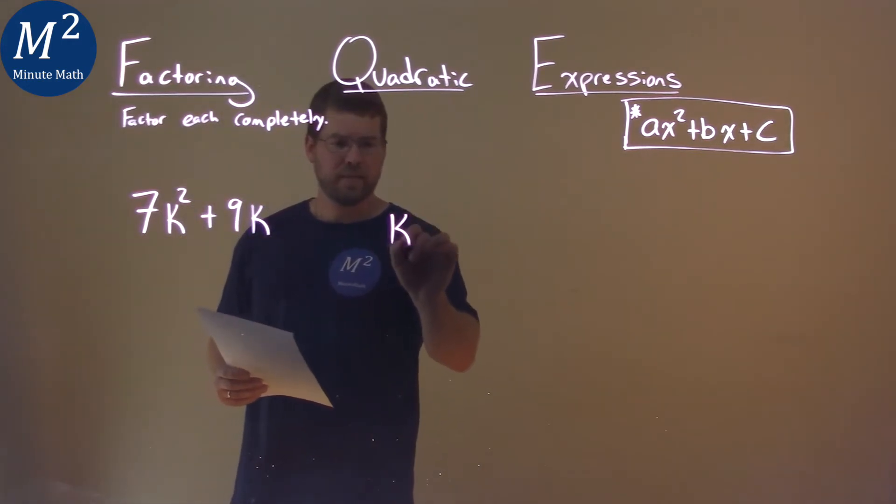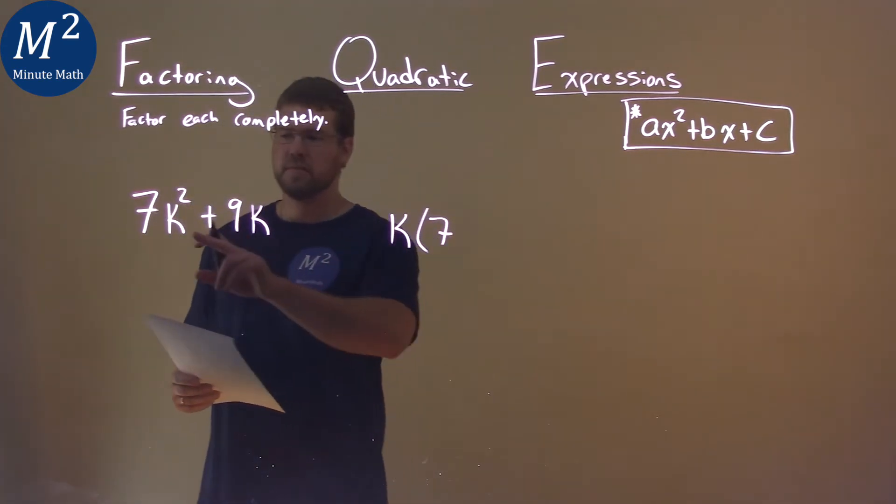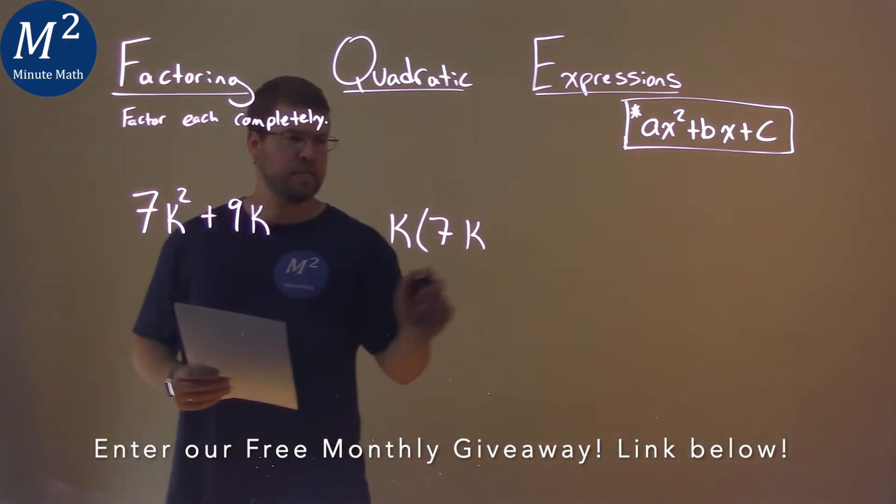If I pull out that k, what am I left with? Well, 7, and then k squared divided by k is 1k, and then 9k divided by k is just a 9.